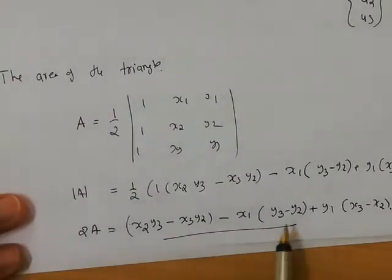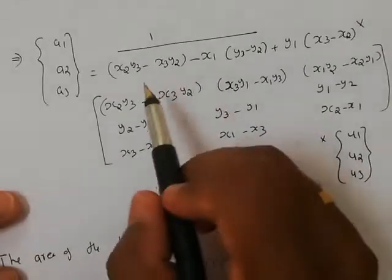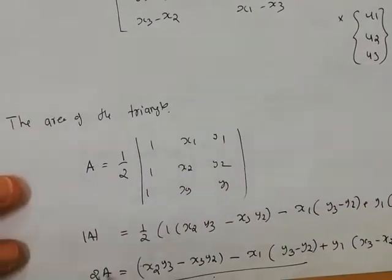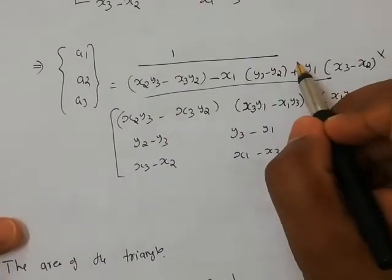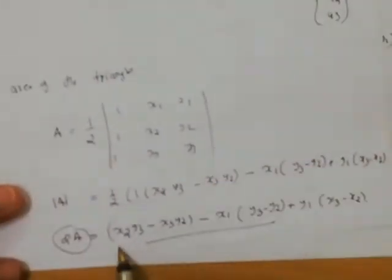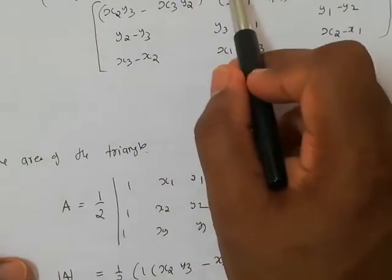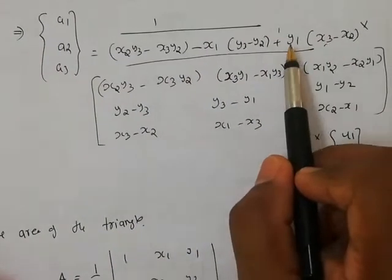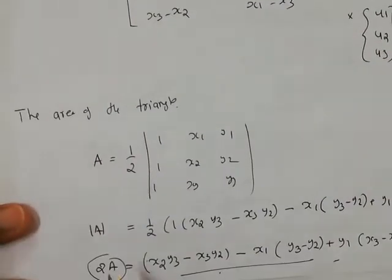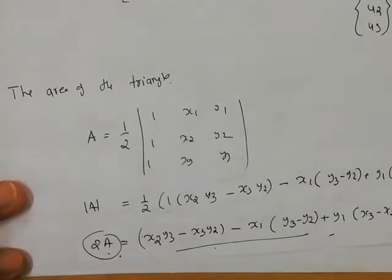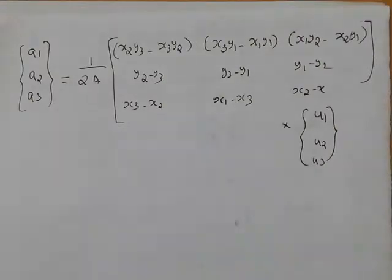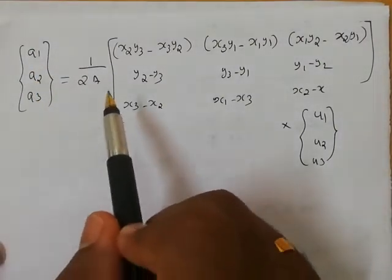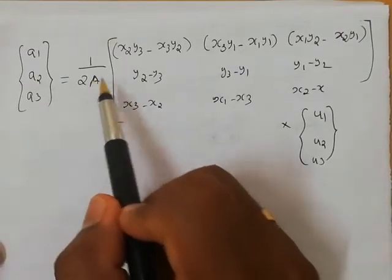This is the value we normally find. Substituting this value as 2A into the equation, we will get the value of A1, A2, A3 as 1 by 2A times the corresponding matrix entries.